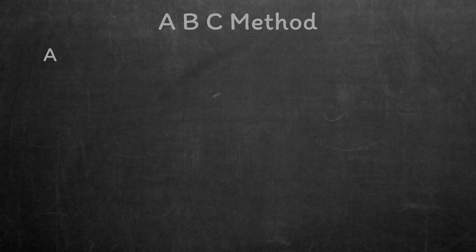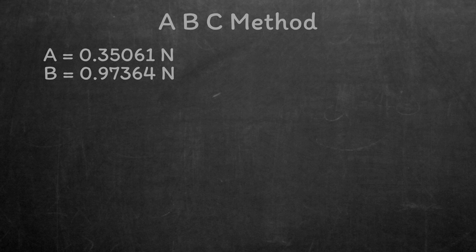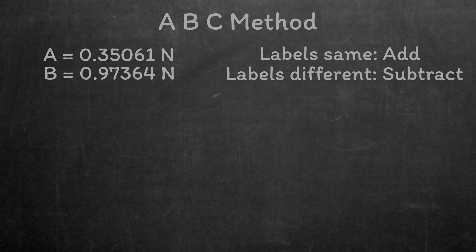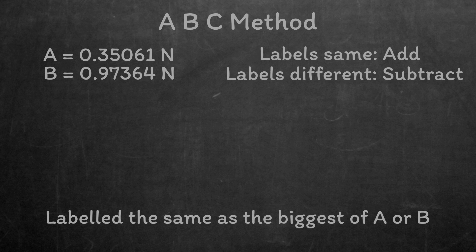For C, we need to look to both the A and B values that we've calculated. If the labels on them are the same, we're going to add them together, and if the labels are different, we're going to take the smallest one away from the biggest one. C is labelled as the same as the biggest of either A or B.